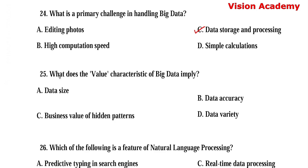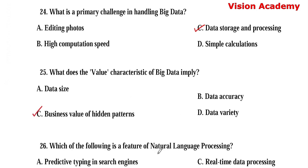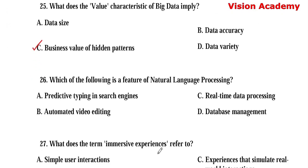Question number 25. What does the value characteristic of big data imply? Option A: Data size. Option B: Data accuracy. Option C: Business value for hidden patterns. Option D: Data variety. Here, option C, business value for hidden patterns, is the right answer.